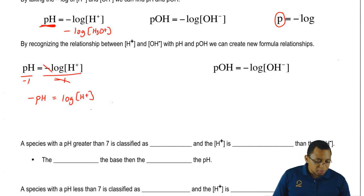We want to just isolate the H positive, so we're going to divide out the log. When you divide anything by log, it becomes 10 to that whatever the variable is.